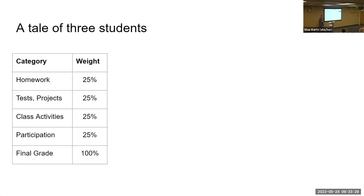We want to begin by thinking about three students. We're going to look at their grades broken out by category: homework, tests, and projects — fairly high-stakes summative assessment types of things — class activities such as workshops or labs, and participation in class. Each of these categories is weighted at about 25 percent.